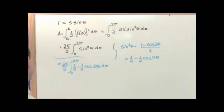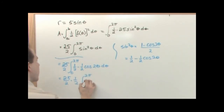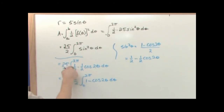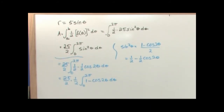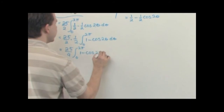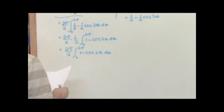So it's going to be 25 over 2 times the integral from 0 to 2π of one-half minus one-half cos(2θ) d theta. I have a common one-half factor, so I'm going to factor it out: 25 over 2 times one-half times the integral from 0 to 2π of 1 minus cos(2θ) d theta. That gives me 25 over 4 times the integral from 0 to 2π of 1 − cos(2θ) d theta. I have this integral, and I can do both parts of it — the integration of the constant 1, and the integration of cos(2θ).